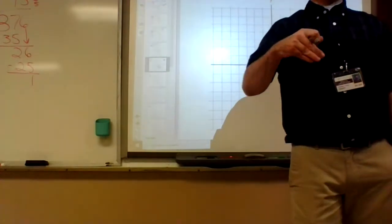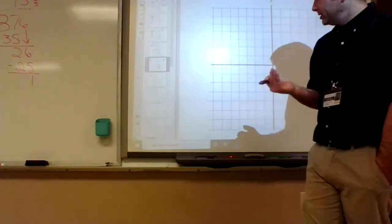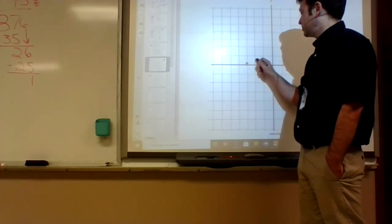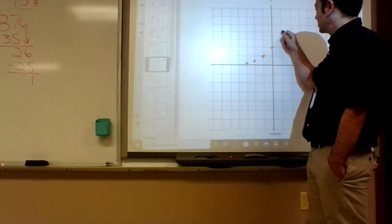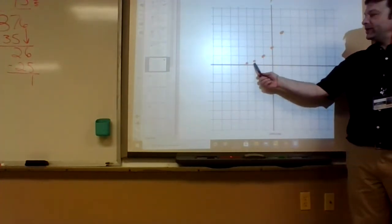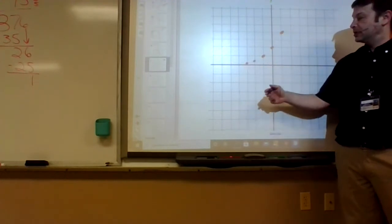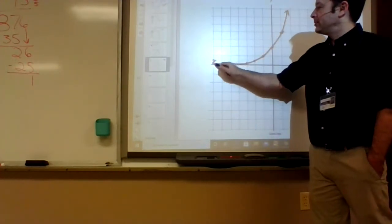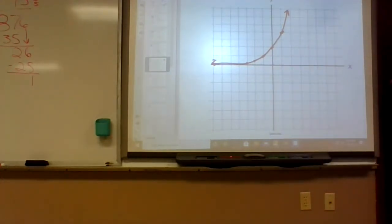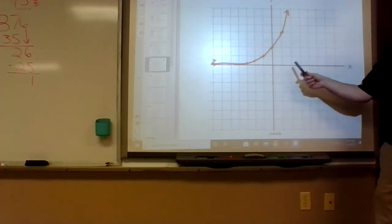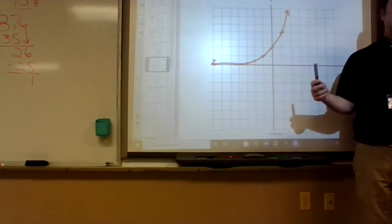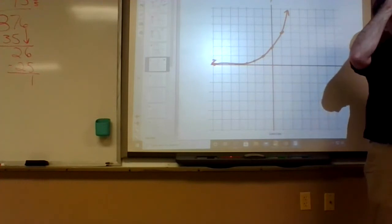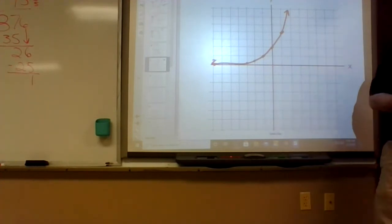Take all your answers from number one and move left one. Basically everything happens one sooner. So it was negative 2 giving one-fourth — now it's negative 3 giving one-fourth. We're not making a new table; we're just using number one and shifting everything left.